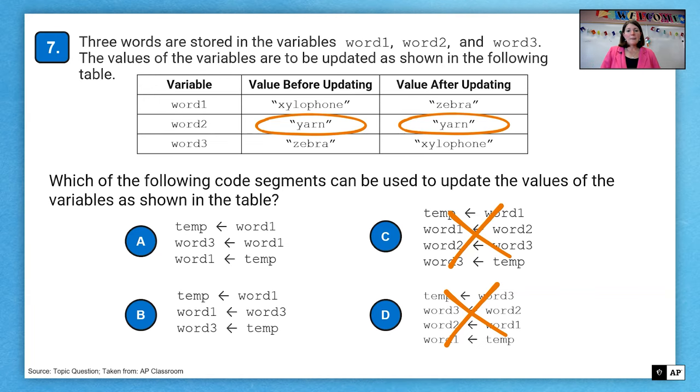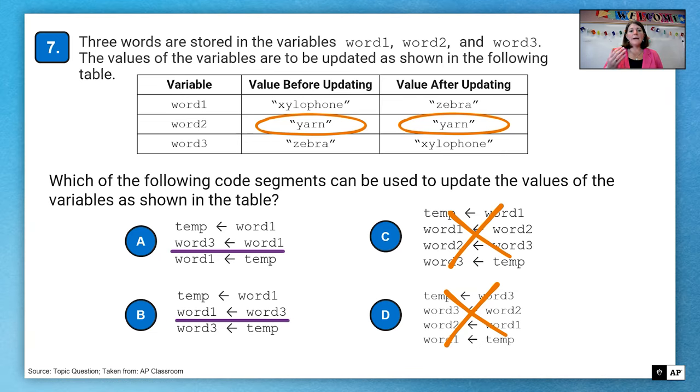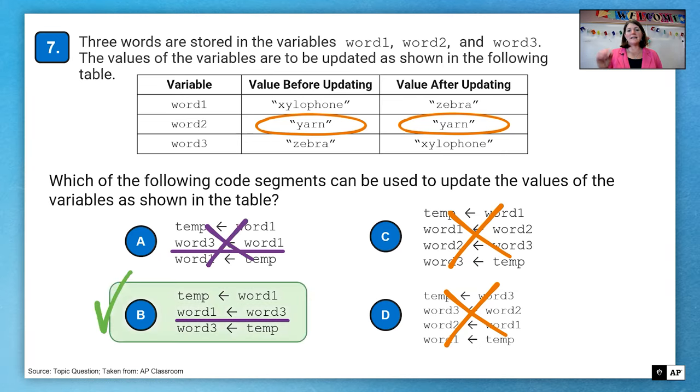Now I'm down to A and B. The difference between answers A and B is that second line. In both of them, the first line assigns the value word to temp. So that means word1 has been saved in the temporary variable. So therefore, we need to now have word1 get the value of word3 because we've saved word1. So now we need it to store the value of word3. And then we can put the temp into word3. And that will swap the two values, again, a common piece of code that you've probably seen before. And so therefore, we need to use answer B because that assigns a value from word3 into word1. And then temp is stored in word3.